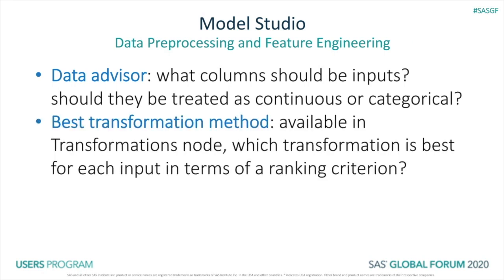For transforming your variables, instead of picking a single transformation to apply to all your inputs, you could use the best transformation method in the transformations node to automatically determine for you what function, if any, from a suite of functions — including log, square, inverse, et cetera — is the best for each individual input, based on the criterion of your choosing.